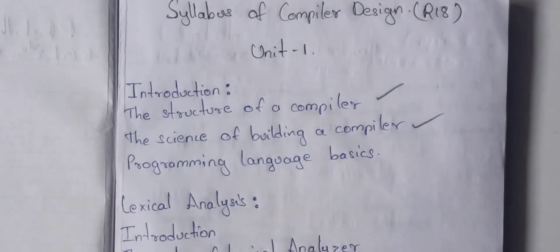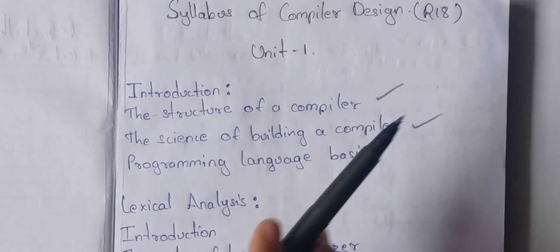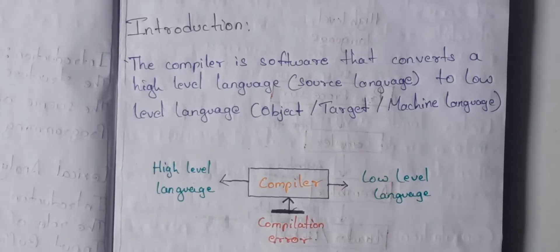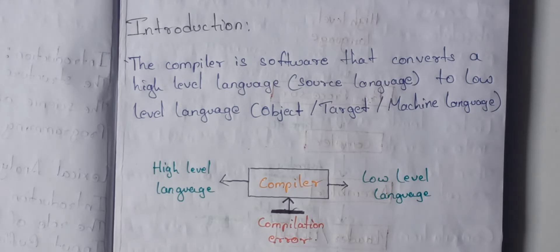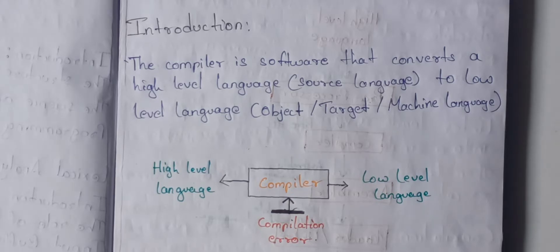First, we will discuss the structure of a compiler. The compiler is a software that converts a high level language to a low level language, i.e. machine language, or target language, or object language. We have a human language, and we have a computer which uses the language of 0s and 1s — that is our machine language.